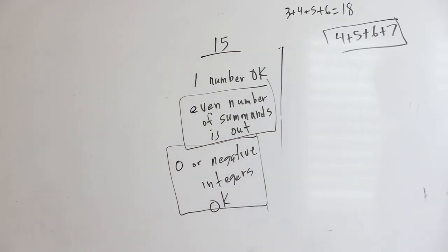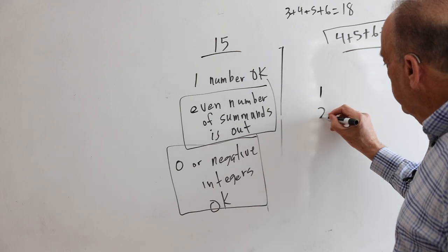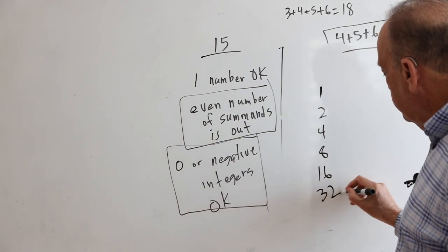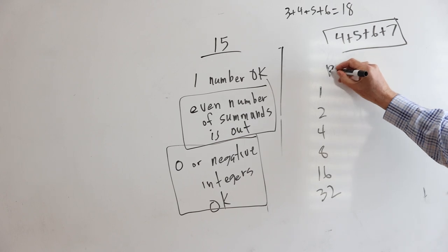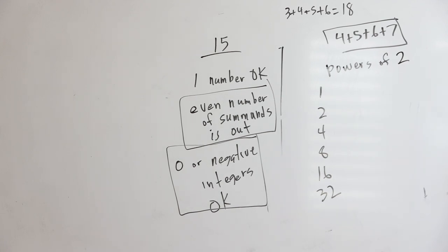So what's left? We haven't talked about the numbers you can't do. We can't do 1, we can't do 2, we can't do 4, we can't do 8, we can't do 16, we can't do 32. So these numbers should be recognizable. They're the powers of 2.